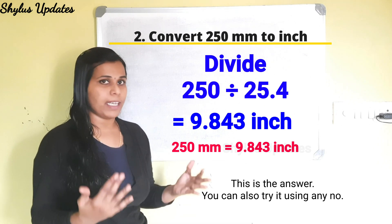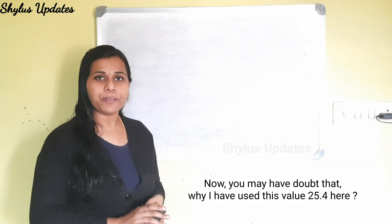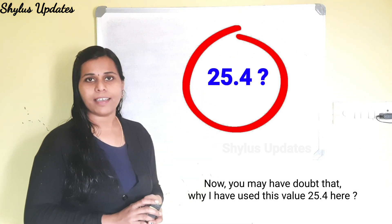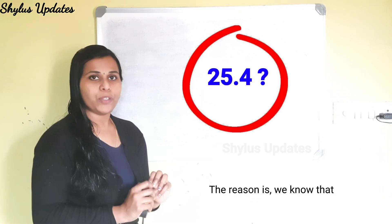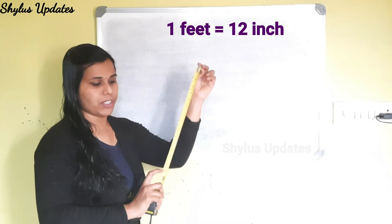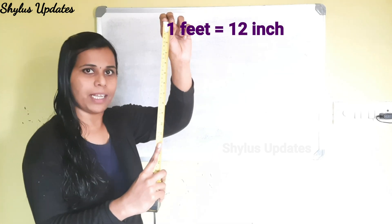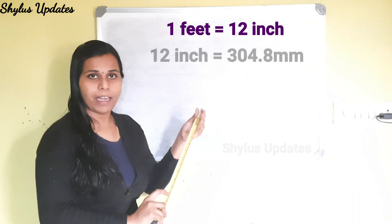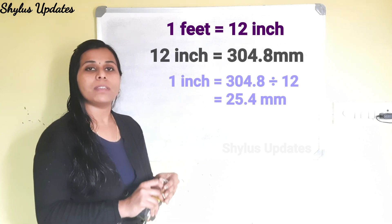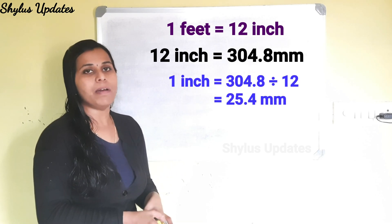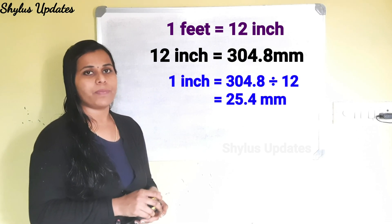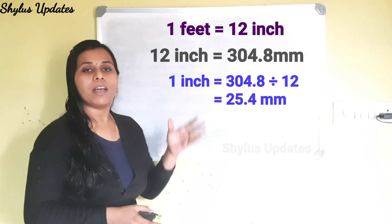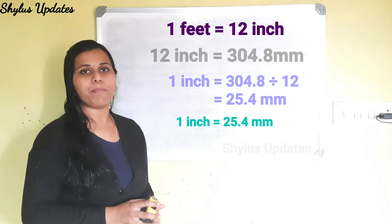You can also try it using any number. You may wonder why I used the value 25.4. The reason is: we know that 1 feet is equal to 12 inch, and 12 inch is equal to 304.8 mm. Therefore, 1 inch is equal to 304.8 ÷ 12, which gives 25.4 mm. In this way, we get 1 inch = 25.4 mm.